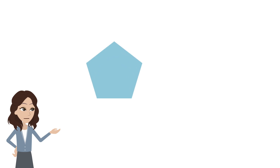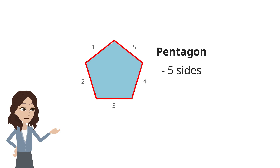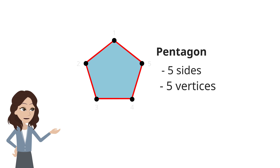Now let's look at this polygon. It is called the pentagon. How many sides and vertices does it have? Pause and discuss with your friends. It is made up of five straight line segments, so we say that it has five sides. It also has five points where two line segments meet, so it has five vertices. So pentagons have five sides and five vertices.